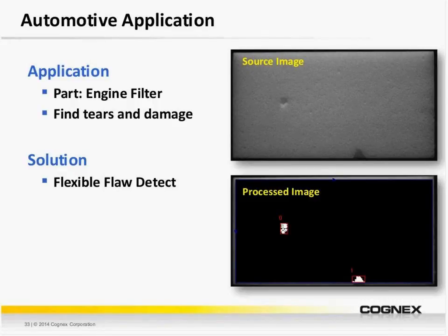Here we have another automotive application — specifically filter paper. There's a naturally occurring surface texture, and we want to look for tears and damage to the paper before it's formed and assembled on the housing. We want to ignore the naturally occurring surface texture and find other major defects. This is possible with some low-angle lighting and Surface Flaw applied to the field of view.